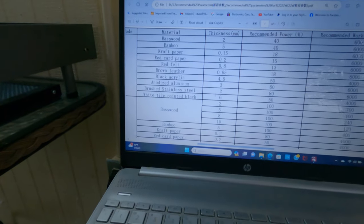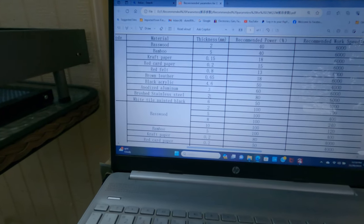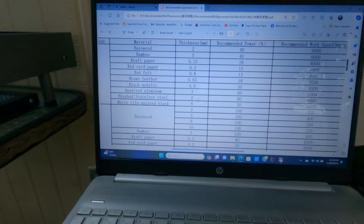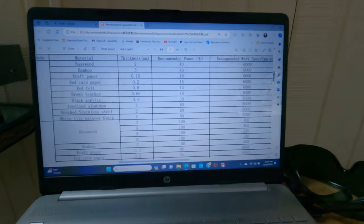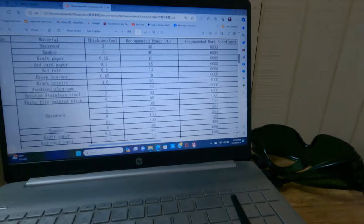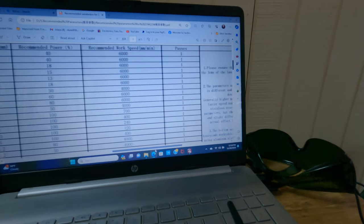I'm going to brush stainless steel, thickness, that's about right. Two millimeters. It recommends the power at 80 and the speed at 6,000. Then you have to look and see how many passes. It'll do it in one pass.